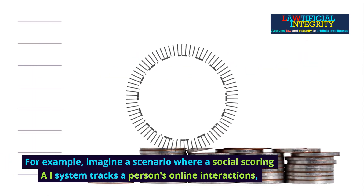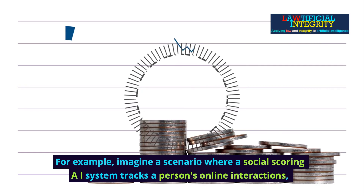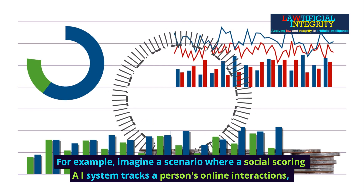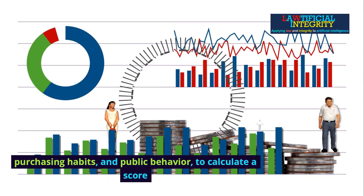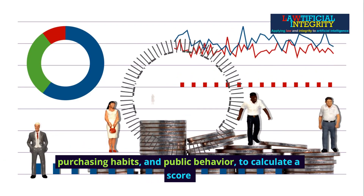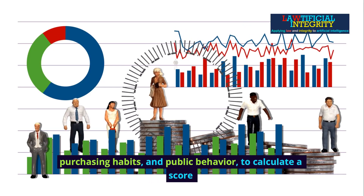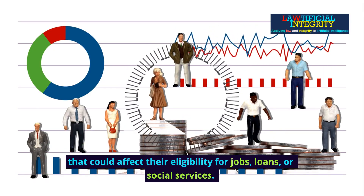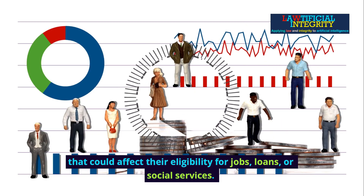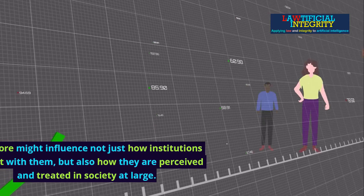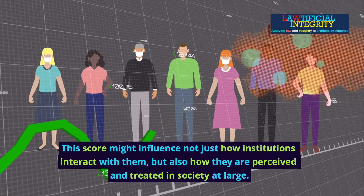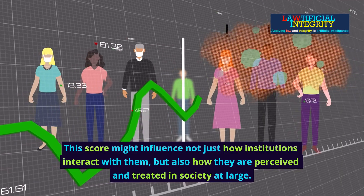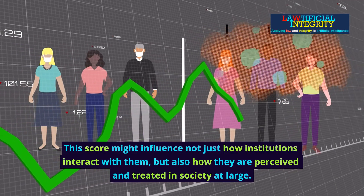For example, imagine a scenario where a social scoring AI system tracks a person's online interactions, purchasing habits, and public behavior to calculate a score that could affect their eligibility for jobs, loans, or social services. This score might influence not just how institutions interact with them, but also how they are perceived and treated in society at large.